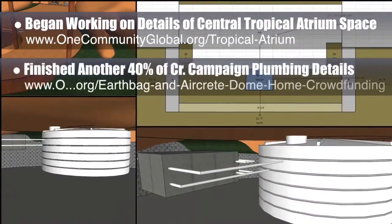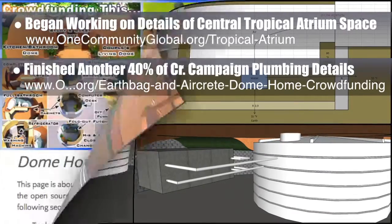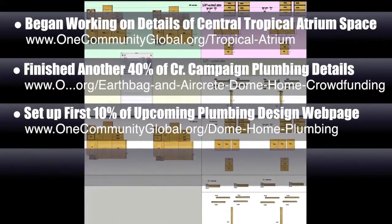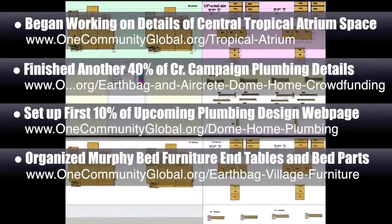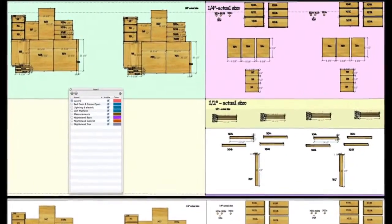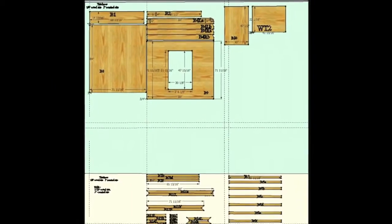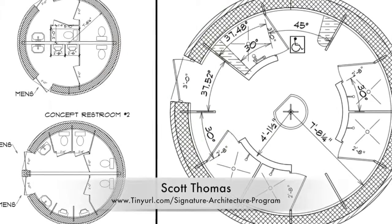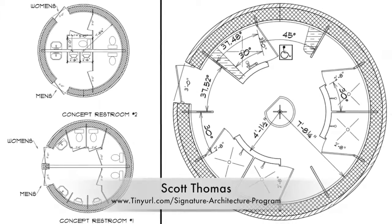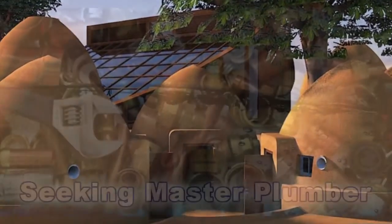Behind the scenes, we also finished another 40% of the crowdfunding campaign details for the open-source Dome Home Plumbing — we're now 70% done there — and began setting up the first 10% of the upcoming webpage, which you can see here. In addition, we continued organizing all the parts for both custom Murphy Bed furniture end tables, seen here organized by size and also color-coordinated so we can start adding other parts to the Murphy Bed. Here is the bottom of the bed being organized the same way. Our newest consultant Scott Thomas and his Shadow Ridge Signature Architecture Program team also began working on the Earthbag Village shower and toilet domes. Here are the initial bathroom concept images and the initial communal shower design. We are seeking a master plumber and a master electrician for this area of the project.